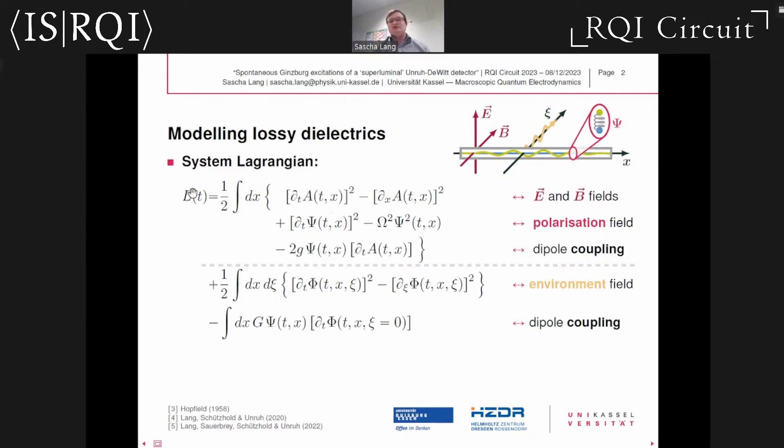We're going to write down a system Lagrangian. The first line accounts for the energy contributions associated with the electric field and the magnetic field. We then add polarization or dispersion by including polarization effects in the medium. We do this by attaching harmonic oscillators psi to all points x of the medium with resonance frequency capital Omega, and we couple those oscillators to the electric field in a dipole approximation with coupling strength little g. The model so far has been known for decades and is this famous Hopfield model, which yields the dispersion relation I had on the previous slide.